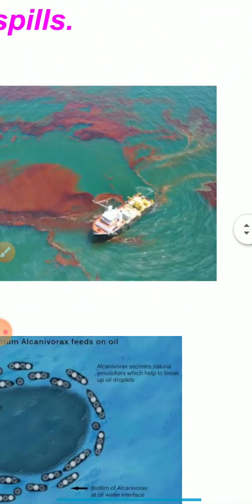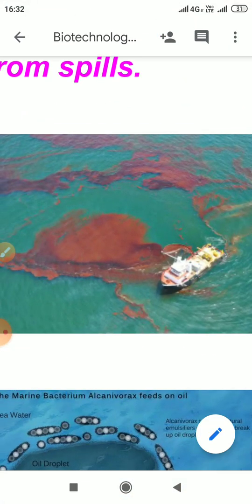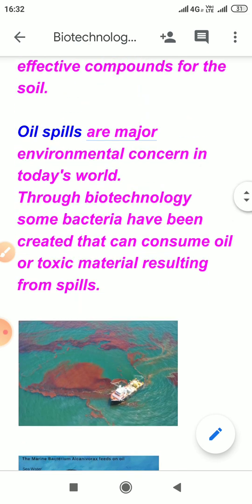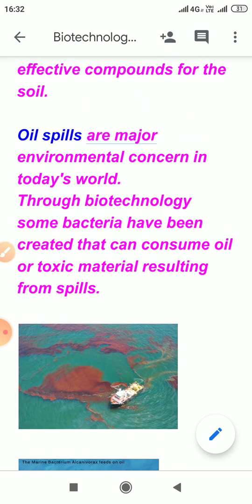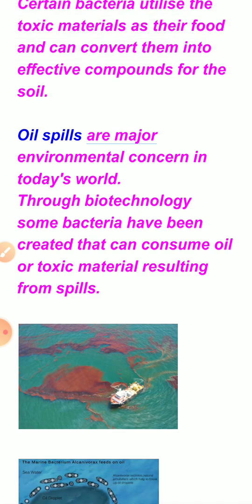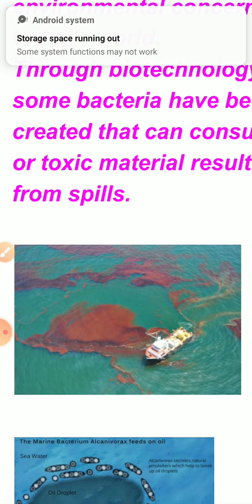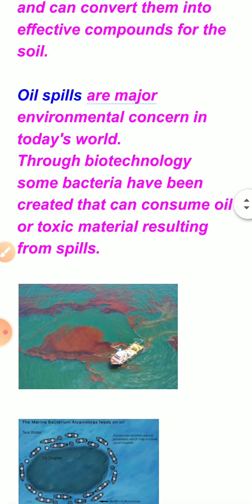You must have heard about oil spills. In this picture you can see an oil spill — oil has spread all around the water. This may happen because of leakage from a ship, or an accident between ships. Such oil spills in seas and oceans are a major environmental concern because they affect aquatic and marine life.